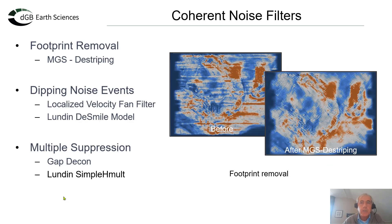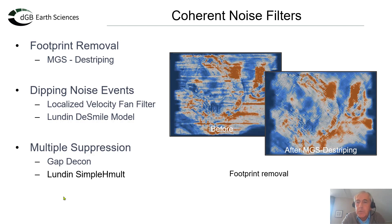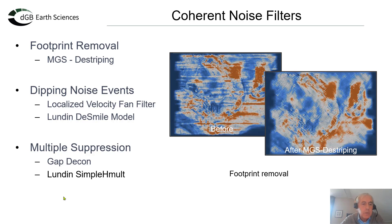Coherent noise suppression. The example shown here is footprint removal using Estimage's MGS destriping. Footprints we see in almost all data sets — they are lines along the acquisition direction — and these can be removed with this plugin, which is based on geostatistical algorithms. But we also have other types of filters for removing dipping noise events, like our localized velocity filter, and also Lundin's D-Smile model for removing migration smiles.